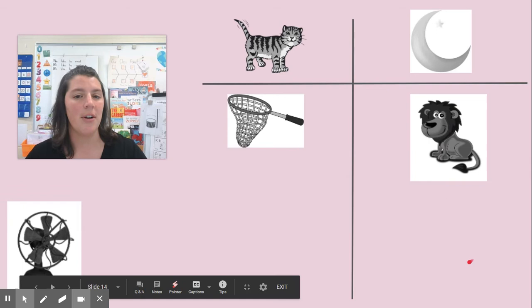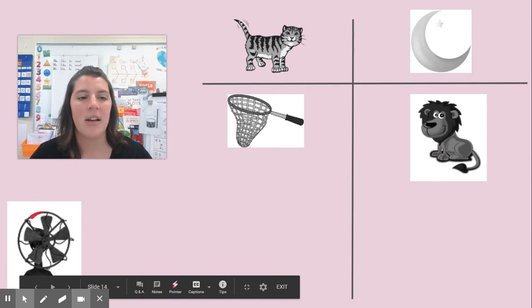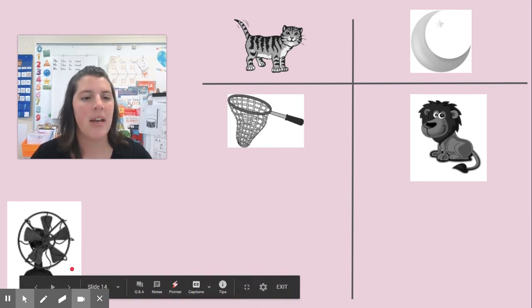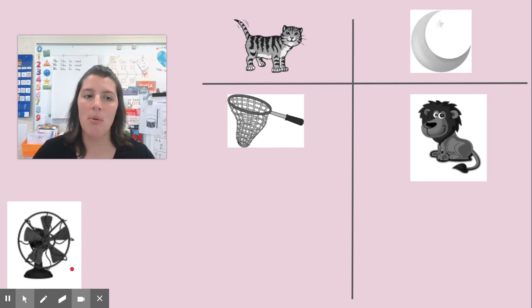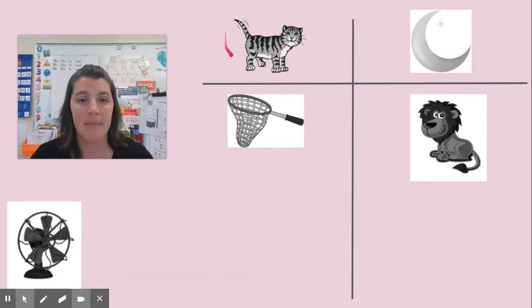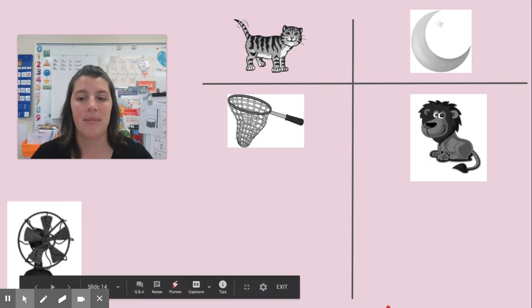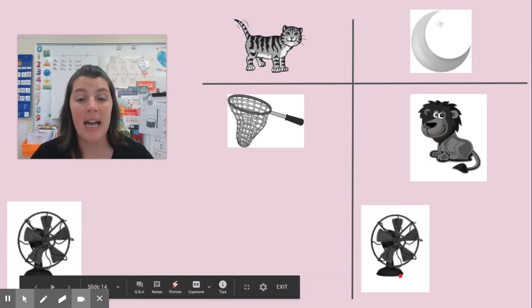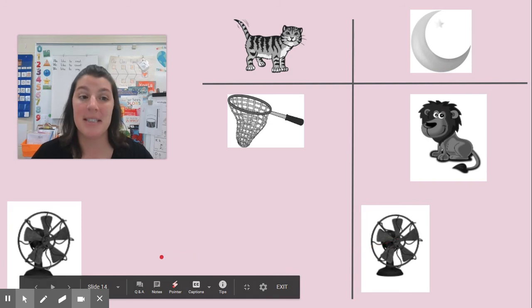Let's try another word. Here's my next picture. Do you know what that is? A fan. Say the word fan. Take your finger and point to where I should put the picture of a fan. Does it have the same ending sound as cat or moon? Fan has the n sound like lion and moon, so I put that picture over here. Is that where your finger was?